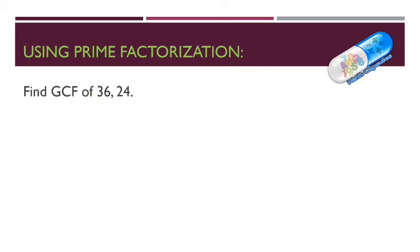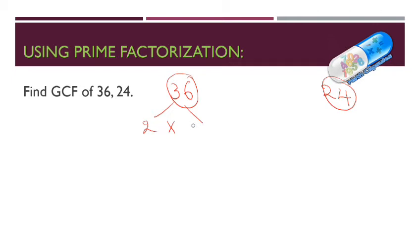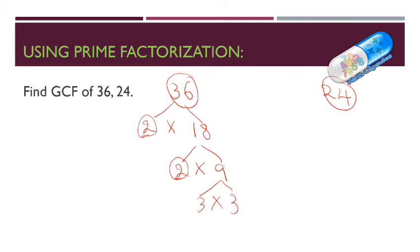Now the normal way for finding the GCF — not the ladder way — is called the prime factorization method. I will put 36 here in a circle and 24 in another circle, then prime factorize each number. 36 equals 2 times 18, and 18 equals 2 times 9. 2 is a prime factor, so I stop there for each 2. 9 equals 3 times 3. So 36 is 2 times 2 times 3 times 3.